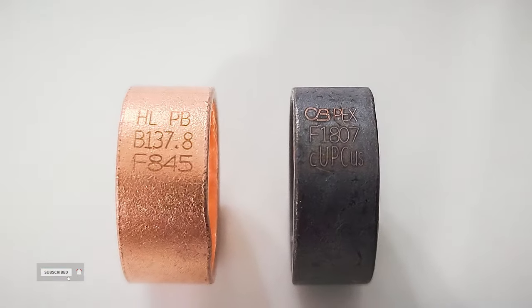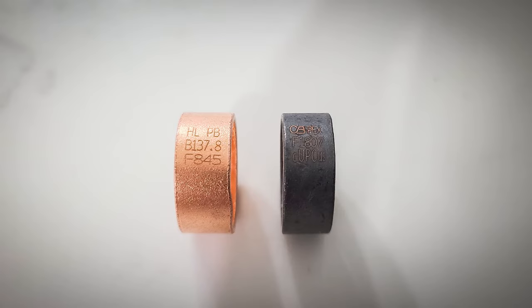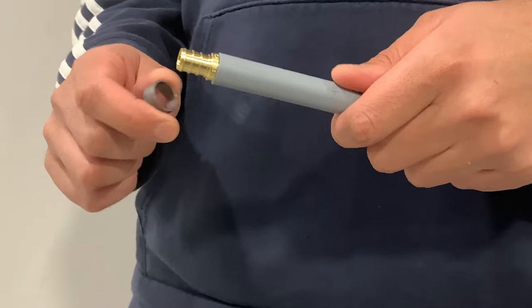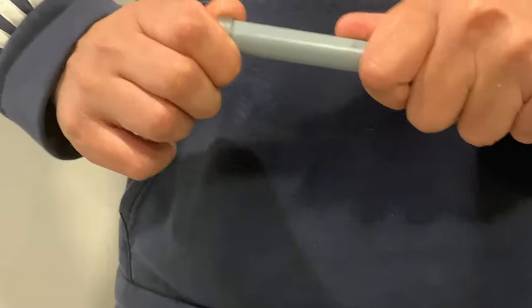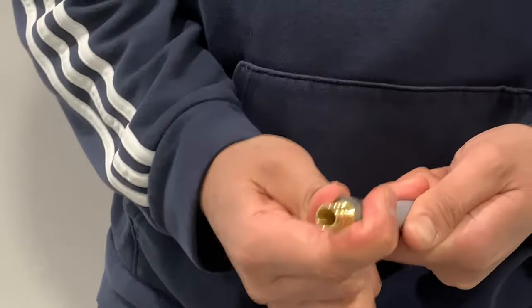This coupling comes with two rings. They are also labeled which one to use for pex and which one for poly B. It is very hard to mess up with these rings because pex ring is smaller in diameter and won't go on poly B pipe easily.